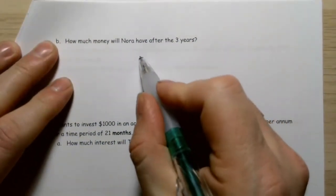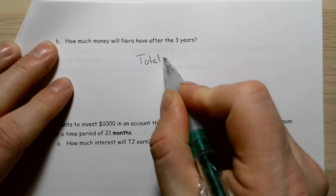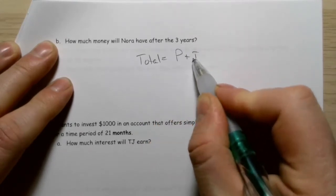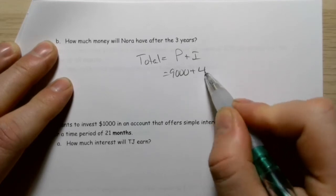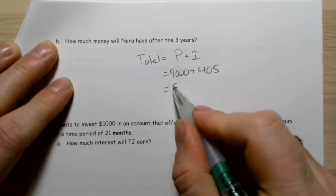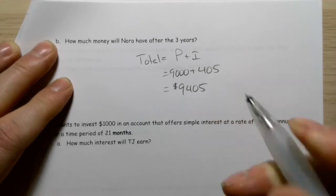How much will she have total after three years? That's the principal plus the interest, so $9,000 plus $405, which is $9,405 in the account.